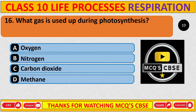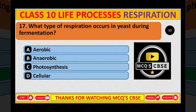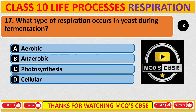Question 16: What gas is used up during photosynthesis? Correct answer is C: Carbon dioxide. Question 17: What type of respiration occurs in yeast during fermentation? Correct answer is B: Anaerobic.